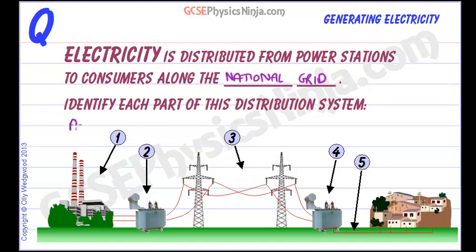To start off with, we have to generate the electricity and that's done at the power station. In a typical fossil fuel power station or nuclear power station, water is heated and that drives turbines, which drives the generators to produce the electricity. Electricity is produced at about 25 kilovolts — that's 25,000 volts, as kilo means thousand.